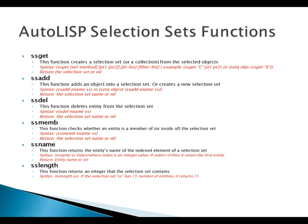The functions are as follows. The first one is SSGet — it is the most used of the selection set functions. This function creates a selection set or a collection from the selected objects. The syntax for SSGet is: SSGet, then the selection method, point one, point two, the list of points, and a filter list — all of these are optional.